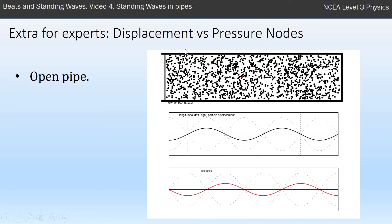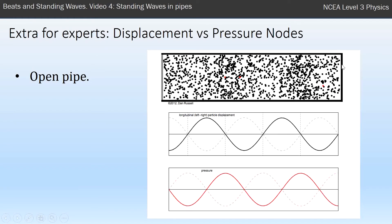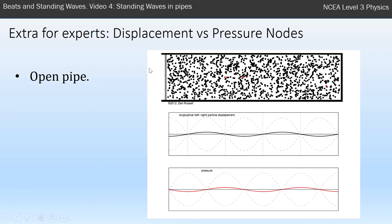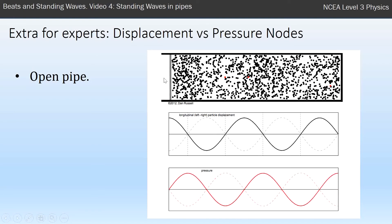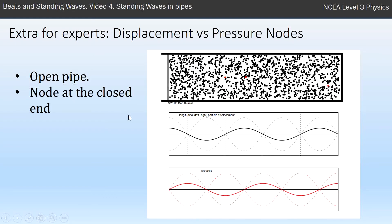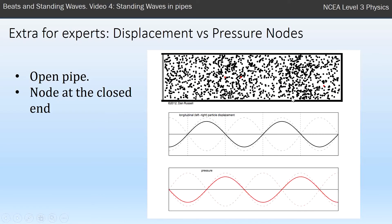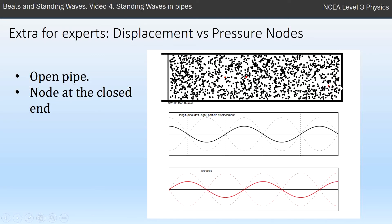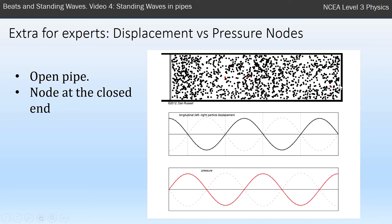This diagram here is an open pipe. It's an open pipe because one end on the right is closed, but this end here is free to move, so that's considered an open pipe. We've got the node at the closed end. A node means that the particles there, the particle that's closest to there basically doesn't get displaced at all, doesn't move.